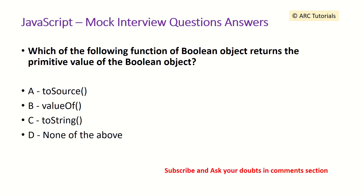The next question is: which of the following functions of the boolean object returns the primitive value of the boolean object? Your options are toSource, valueOf, toString, or none of the above. The answer is valueOf, which will return the primitive value.